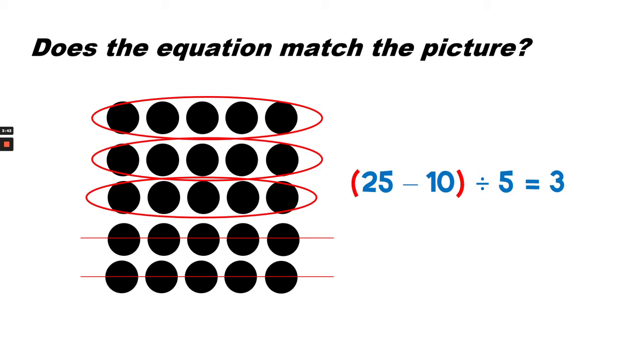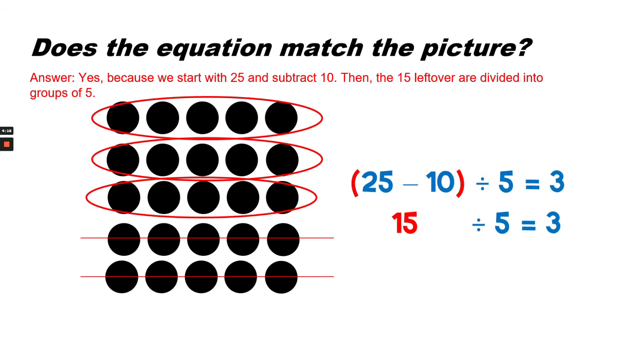Notice that 2 rows of 5 are crossed out. 2 rows of 5 or 2 times 5 is 10. So take away 10. What about the circles? The red circles surrounding the first rows? It's separating them into groups, right? How many groups are there? There are 3 groups. So does the equation match the picture? It does, yes, because we start with 25 and subtract 10. Then the 15 left over are divided into groups of 5. So we can say that 15 divided by 5 equals 3.